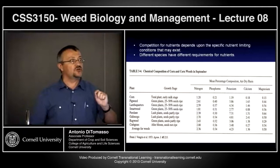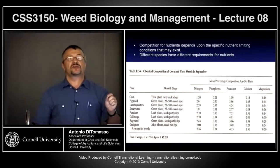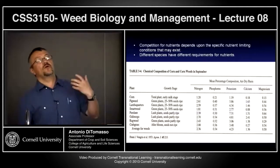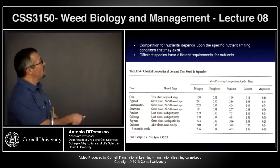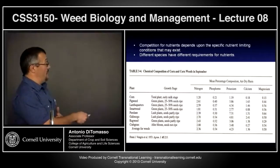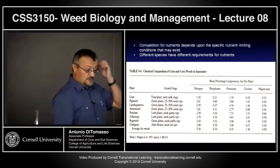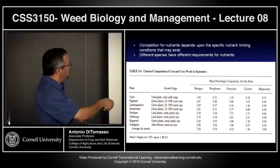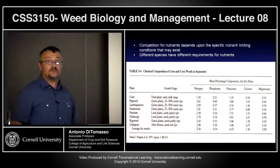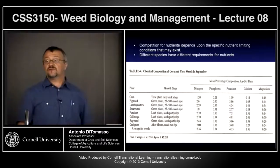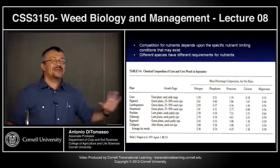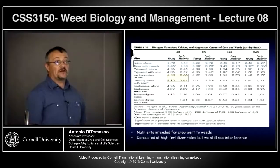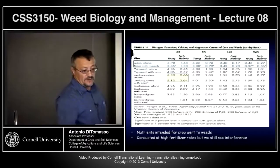Apart from nitrogen being expensive, the point isn't to memorize what percentage composition lambsquarters has. The idea is that these weeds are certainly better competitors for certain compounds. This is saying the same thing: looking at corn grown alone, the nitrogen percentage in young and mature plants. When corn grows with weeds, both values drop — and these are significant differences. Look at lambsquarters: when grown alone they still maintain their percentage; they're much better competitors.